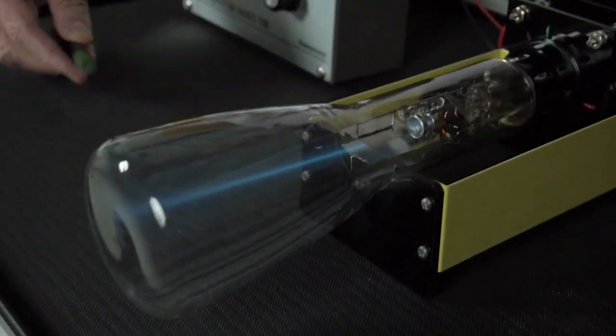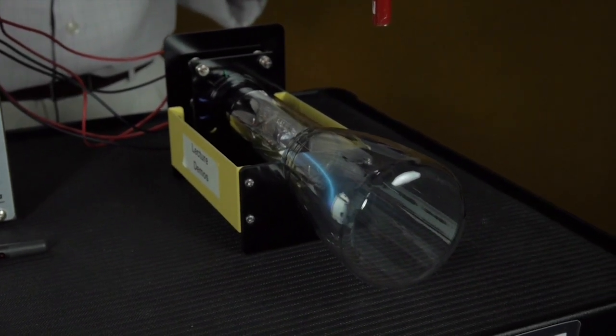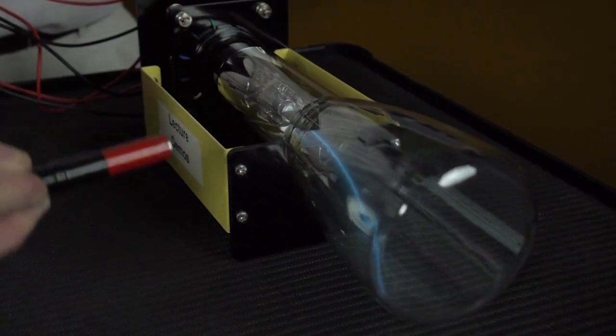When the magnetic field is pointing straight down, the beam bends to the left. But it has to do that because we can get back to our original case by just rotating the magnetic field.